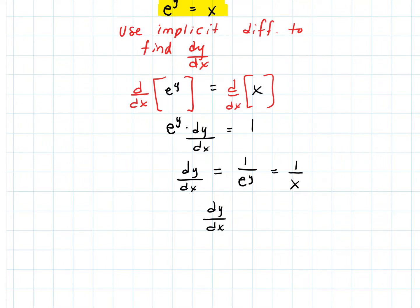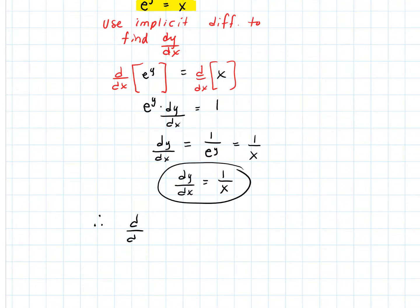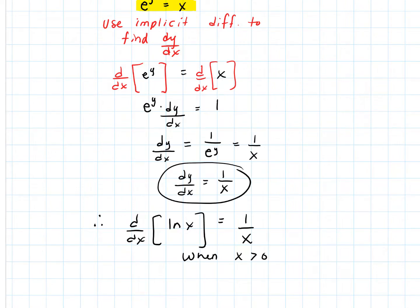So the derivative dy/dx is simply 1 over x. It was a pretty simple proof with implicit differentiation. We have now shown that the derivative of the natural log of x, when x is greater than 0, is 1 over x. We could even extend this by throwing absolute values around the x — the derivative of the natural log of the absolute value of x is also equal to 1 over x.